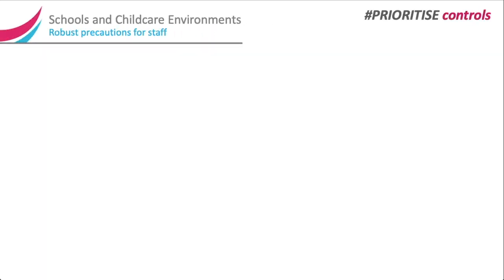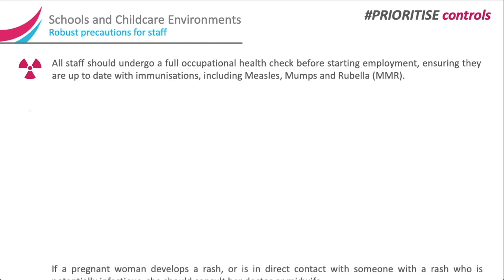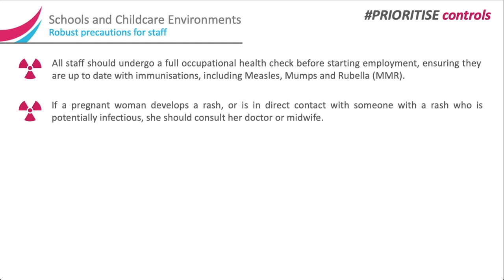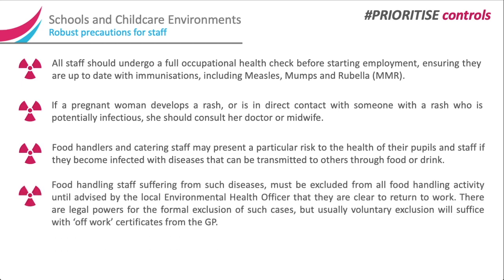Robust precautions for staff. All staff should undergo a full occupational health check before starting employment, ensuring they are up to date with immunisations including measles, mumps and rubella. If a pregnant woman develops a rash or is in direct contact with someone with a potentially infectious rash, she should consult her doctor or midwife. Food handlers and catering staff may present a particular risk if they become infected with diseases transmissible through food or drink; such staff must be excluded from all food handling activity until advised by the local environmental health officer that they are cleared to return to work. There are legal powers for formal exclusion, but usually voluntary exclusion with a GP certificate will suffice.